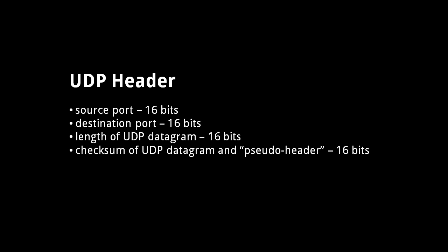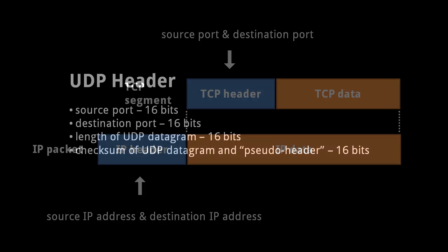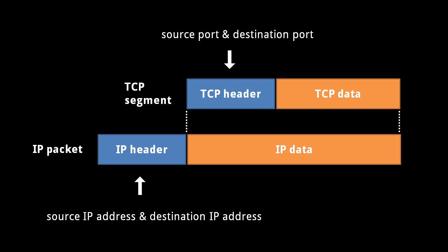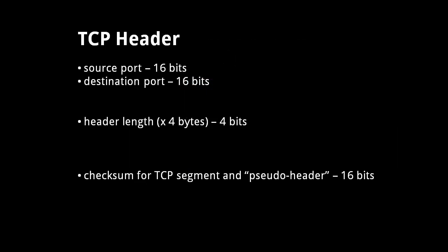the receiver of a UDP datagram doubly ensures that the datagram didn't get misrouted. That's really all there is to UDP headers. TCP headers are a bit more complicated. Like a UDP header, a TCP header includes source and destination ports, and a checksum that covers both the TCP segment itself and a pseudo-header of the containing IP packet. Strangely, a TCP header specifies its own length, but not the length of the segment's data.